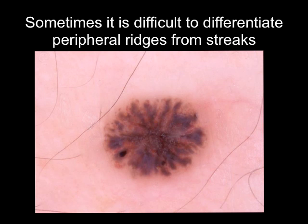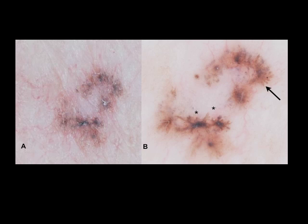Other techniques, such as the dermoscopic wobble test described by Dr. Ralph Brown, can also assist in differentiating a seborrheic keratosis from a melanocytic lesion. However, if one is still in doubt as to whether the lesion is a seborrheic keratosis or not, one should resort to a biopsy for definitive diagnosis.